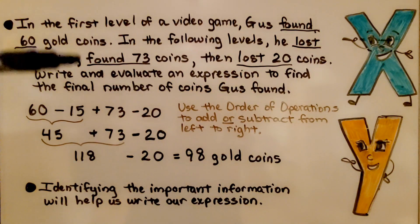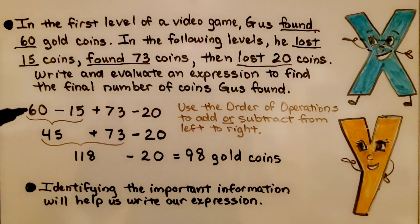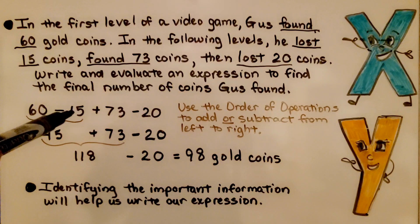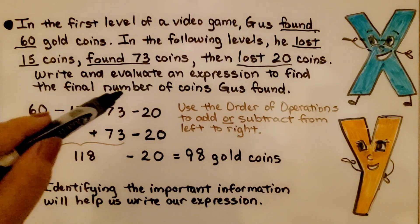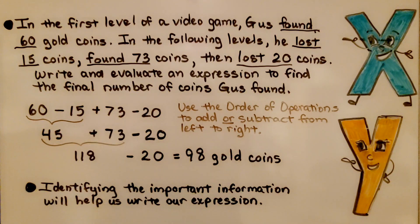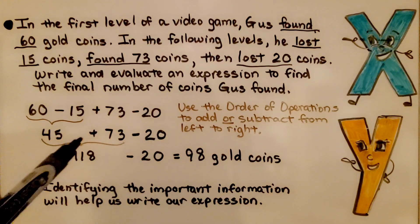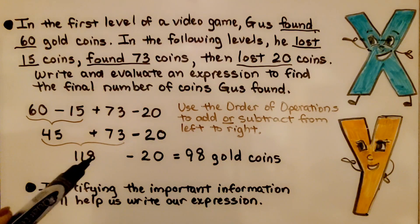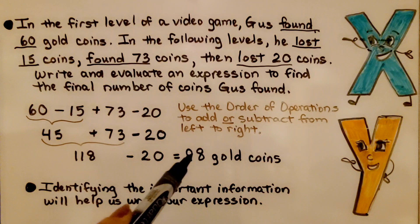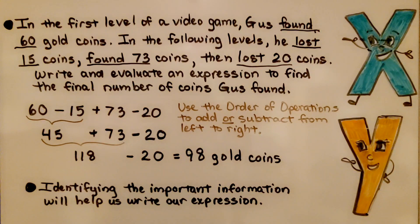The words 'lost' and 'found' tell us if we're adding or subtracting. He found 60 in the beginning, so we have positive 60. Then he lost 15, so we take 15 away. Then he found 73, so we add 73 more. Then he lost 20, so we take 20 away. Using order of operations: 60 minus 15 is 45, then 45 plus 73 is 118, and 118 minus 20 gives us 98 gold coins. When Gus finished those levels, he had 98 gold coins.